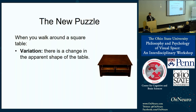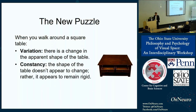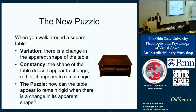Here's an intuitive example. When you walk around a square table, there's a change in the apparent shape of the table. When viewed from above, perhaps the table looks perfectly square. But our claim is when viewed from the side at a distance, you represent the table as slightly squished in depth, so that it appears very slightly wider than it is deep. And when viewed from another side, it looks squished in a different dimension. And yet, there's also a constant element: the shape of the table doesn't appear to change as you walk around it. It appears to remain rigid.